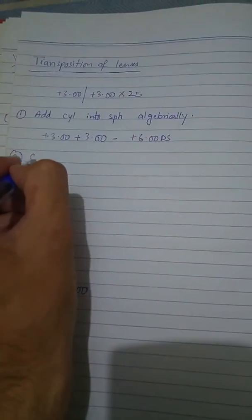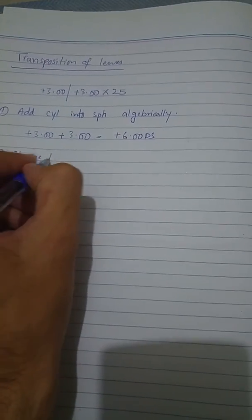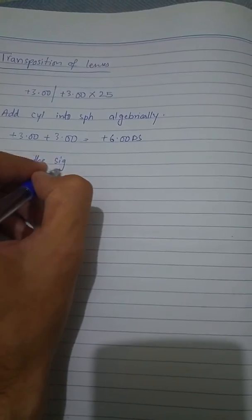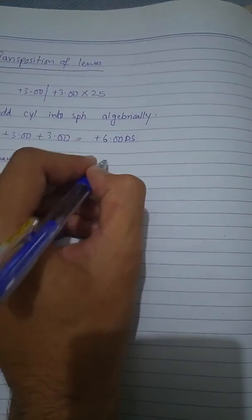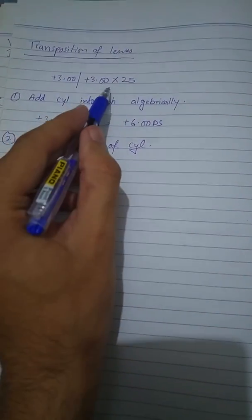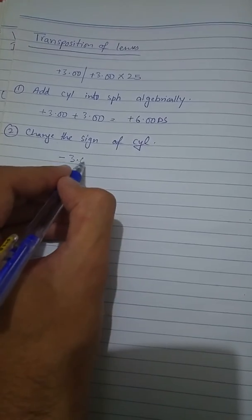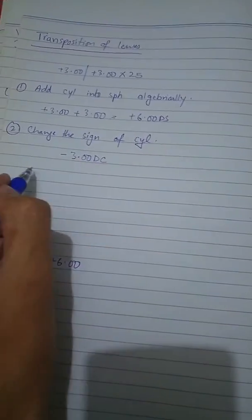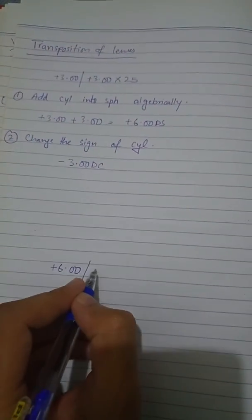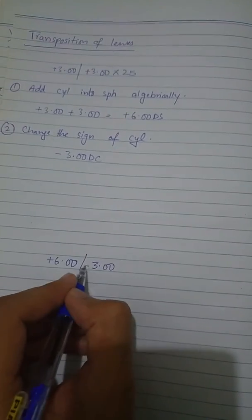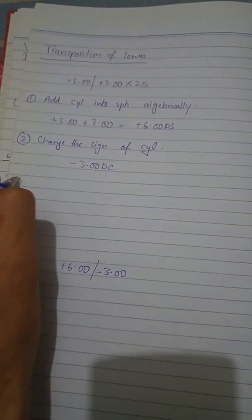The second step of transposition is change the sign of cylinder. In the prescription we have plus three, so we will change it into minus three. This is the cylinder of the new prescription.